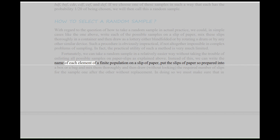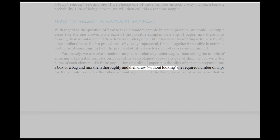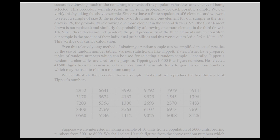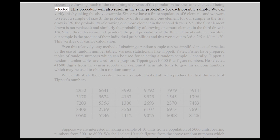Instead, we can write the name of each element of a finite population on a slip of paper, put the slips into a box or a bag and mix them thoroughly, and then draw, without looking, the required number of slips for the sample one after the other without replacement. In doing so, we must make sure that in successive drawings each of the remaining elements of the population has the same chance of being selected. This procedure will also result in the same probability for each possible sample.